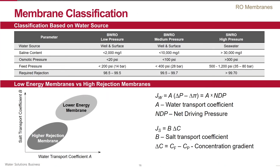There are several ways to classify RO membranes. One of them, shown here, depends on the water source of the application. In general, membranes can be divided into seawater and brackish water membranes depending on feed water salinity. Here in the table you can see very approximate brackets for each membrane. For example, for seawater membranes, the salinity varies from 30,000 to 35,000 milligrams per liter and up, and these membranes can operate at pressures up to 80 bars.